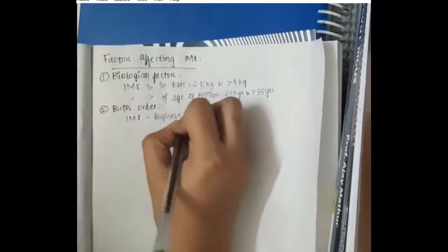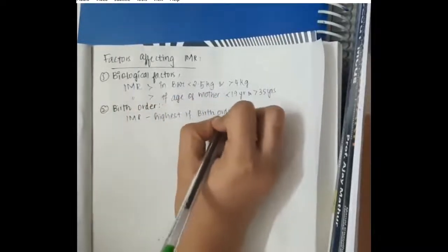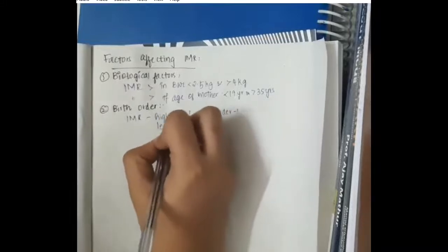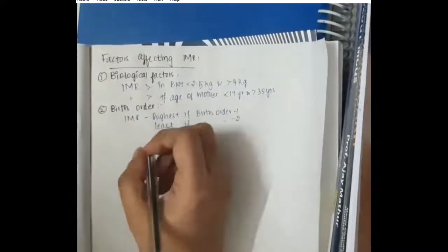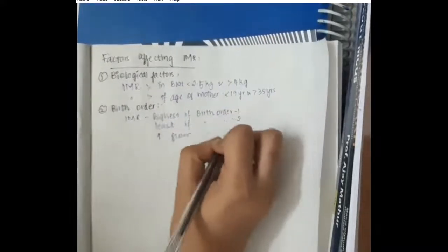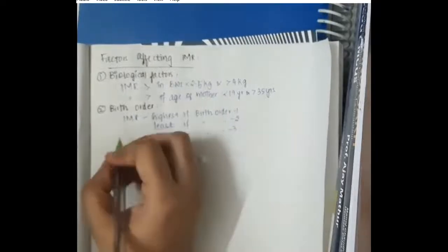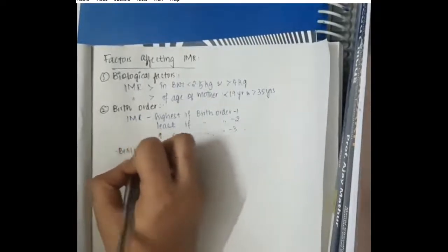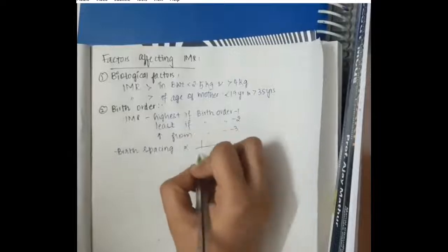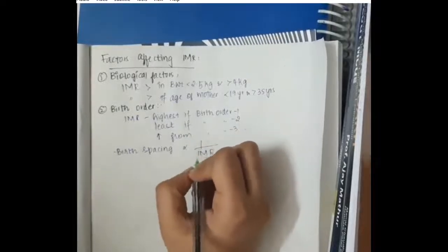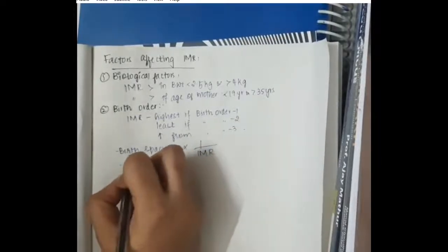Then we have birth order. Infant mortality rate is highest if the birth order is 1 and it is least if the birth order is 2, and it is increased from birth order 3. Infant mortality rate is more increased when birth order is 3. It is more if it is 4, like that.